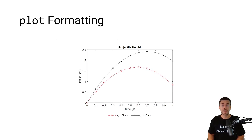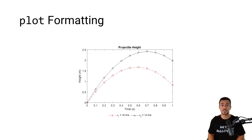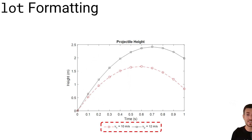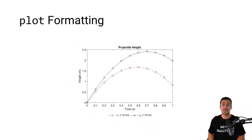The result is going to be a plot that looks like this, and the goal of this video is to show you how to format the line style, color, and add markers to the plot, as well as format the legend including the orientation of the legend entries, the legend outline, and the legend location. Let's head over to MATLAB and create the plot.